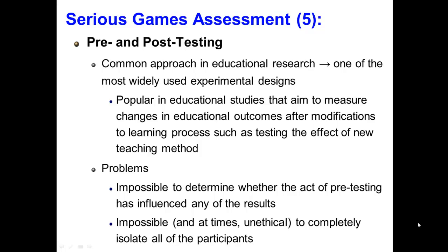Despite the widespread use of pre- and post-testing, there are a number of problems associated with it. Most importantly, it is impossible to determine whether the act of pre-testing influences any of the results. Furthermore, it is impossible, and at times unethical, to completely isolate all of the participants. For example, if two groups of child participants attend the same school, they will most likely interact outside of lessons, potentially influencing the results. While if the child participants are taken from different schools to prevent this, randomization is not possible.